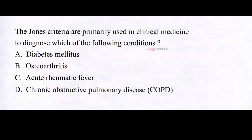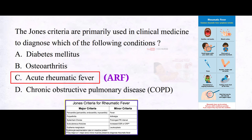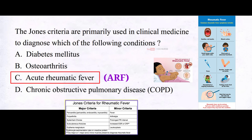The Jones criteria are primarily used in clinical medicine to diagnose which condition? A. Diabetes mellitus. B. Osteoarthritis. C. Acute rheumatic fever. D. Chronic obstructive pulmonary disease. The correct answer is C: acute rheumatic fever. The Jones criteria are clinical guidelines used to diagnose acute rheumatic fever, considering major and minor criteria and requiring evidence of a recent streptococcal infection. If a patient meets the criteria, it suggests an ARF diagnosis, which can lead to heart complications. Early diagnosis and appropriate treatment are essential to prevent further damage.